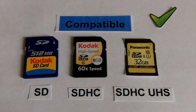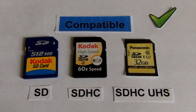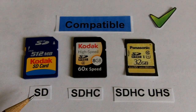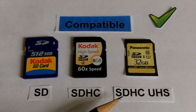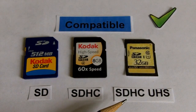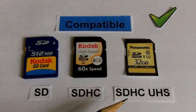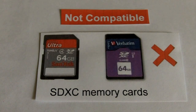To summarize, these three types of SD cards are all compatible with Kodak pocket video cameras: SD, SDHC, and SDHC ultra-high-speed memory cards.